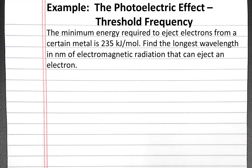The minimum energy required to eject electrons from a certain metal is 235 kilojoules per mole. Find the longest wavelength in nanometers of electromagnetic radiation that can eject an electron.